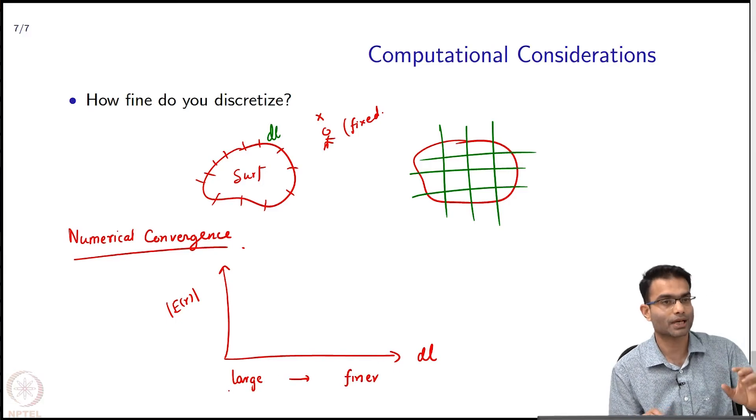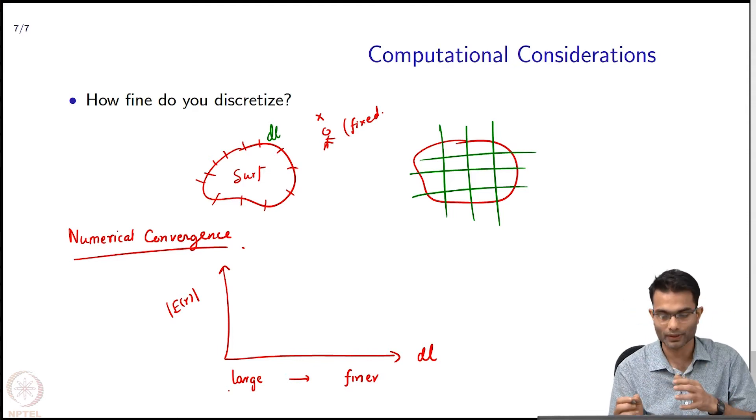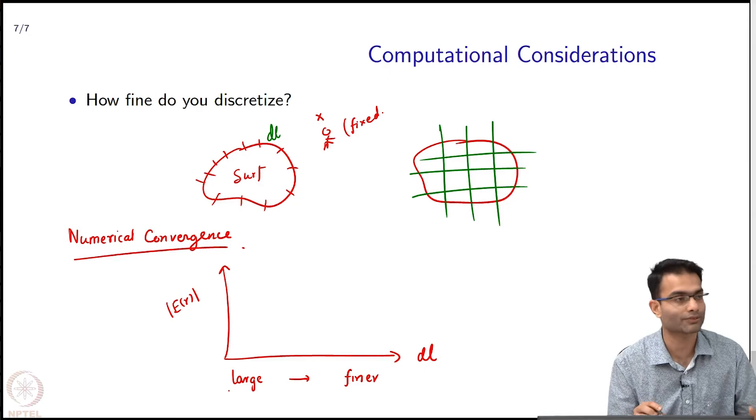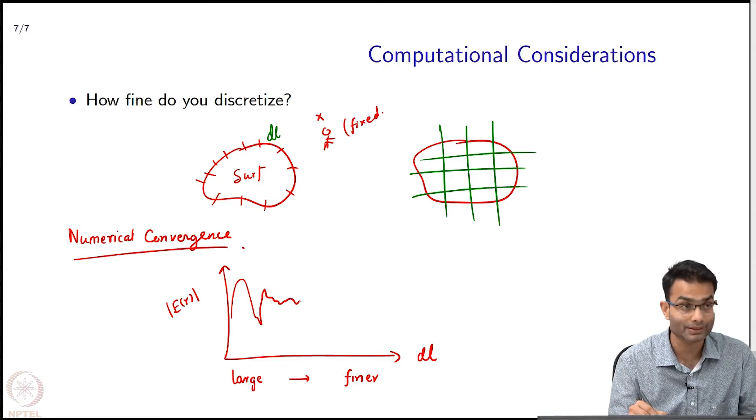DL is starting from a large number and decreasing. It's sort of like inverse, you can think of this as 1 by DL or whatever, but basically start from a large thing. So, you might actually observe some fluctuating behavior like this.